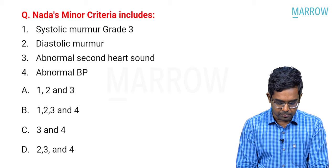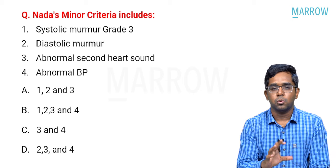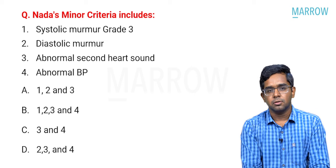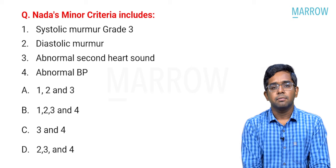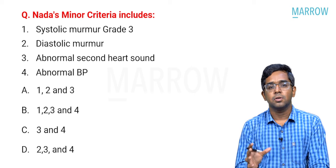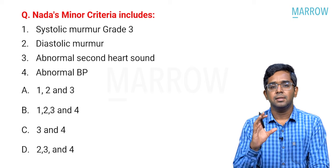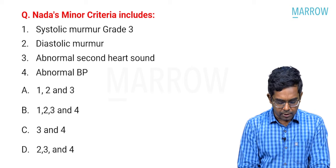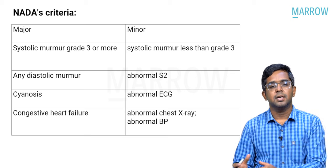I will start with the first question about NADA's minor criteria. It is a multiple option type question where you have to choose what is applicable for NADA's minor criteria. Before I go to the discussion, let me tell you what NADA's criteria is. It is a criteria useful in the clinical diagnosis of congenital heart disease — based on some clinical findings, we think about the possibility of congenital heart disease. NADA's criteria, just like any other clinical criteria, has major criteria and minor criteria.